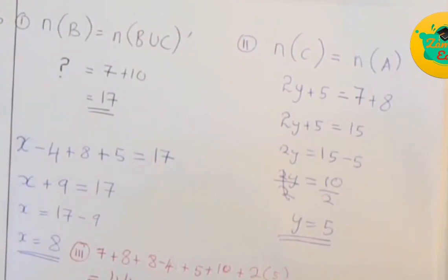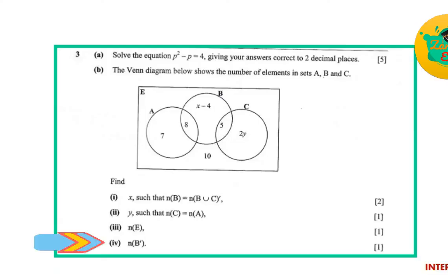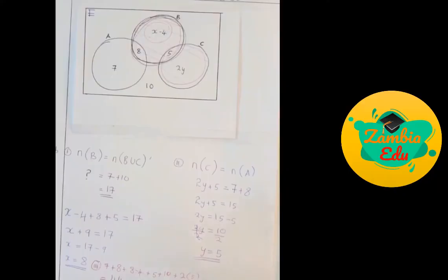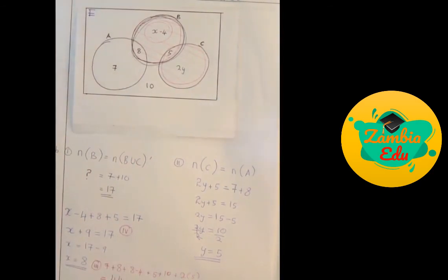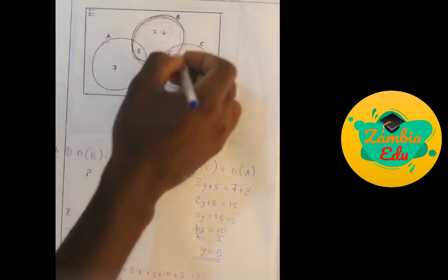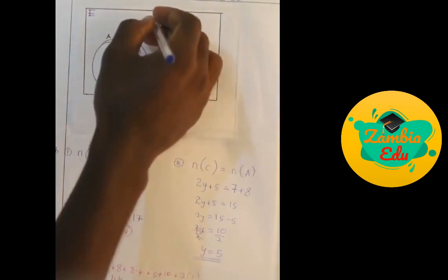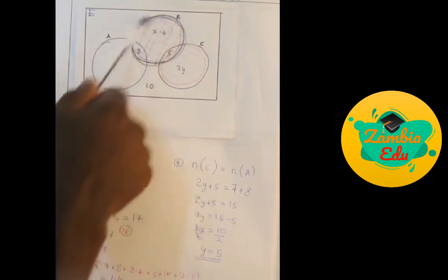You get your one mark there — it's a simple one so they're not giving many marks. Our last part for the 2019 Internal says: find numbers in B complement. Set B complement means everything outside set B.